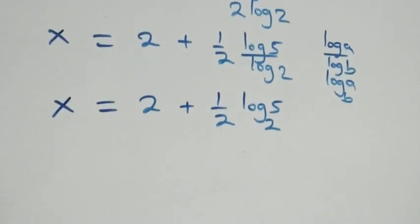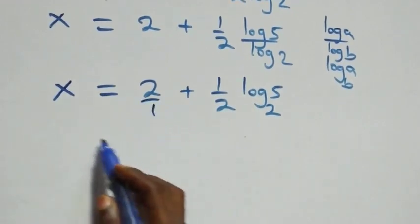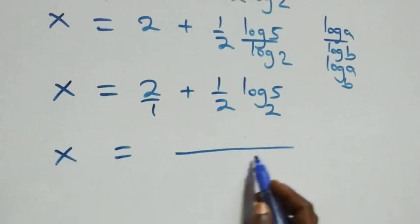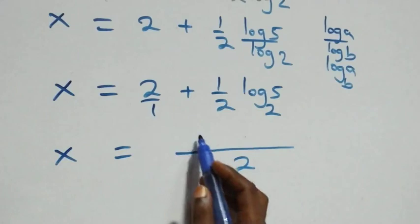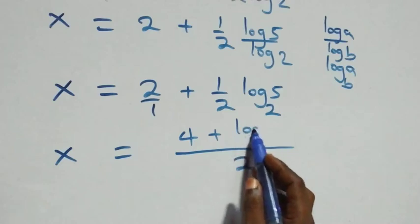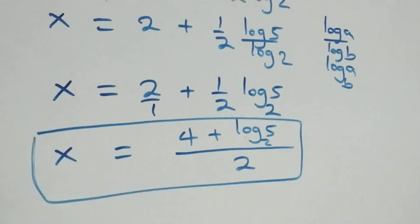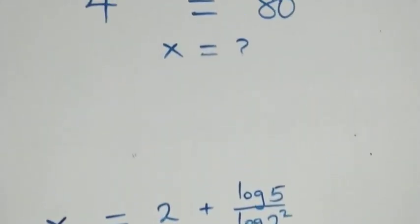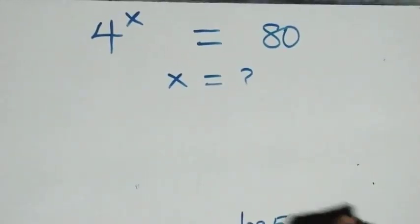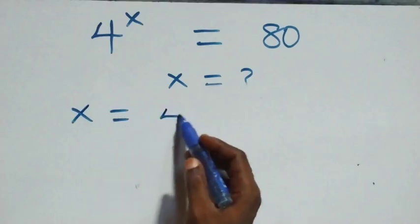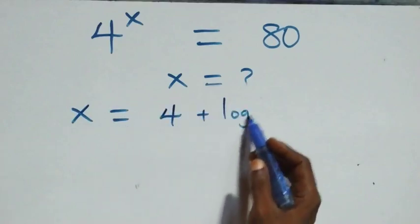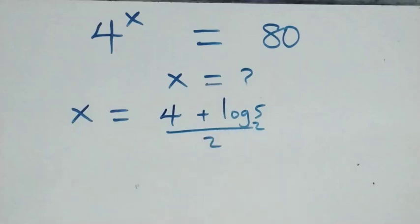We combine these terms by writing two as two over one and finding a common denominator of two. Multiplying two by two gives four, so x equals (four plus log five to base two) all over two. Let's verify this satisfies the original equation by substituting x equals (four plus log five to base two) over two back into four raised to the power x equals eighty.